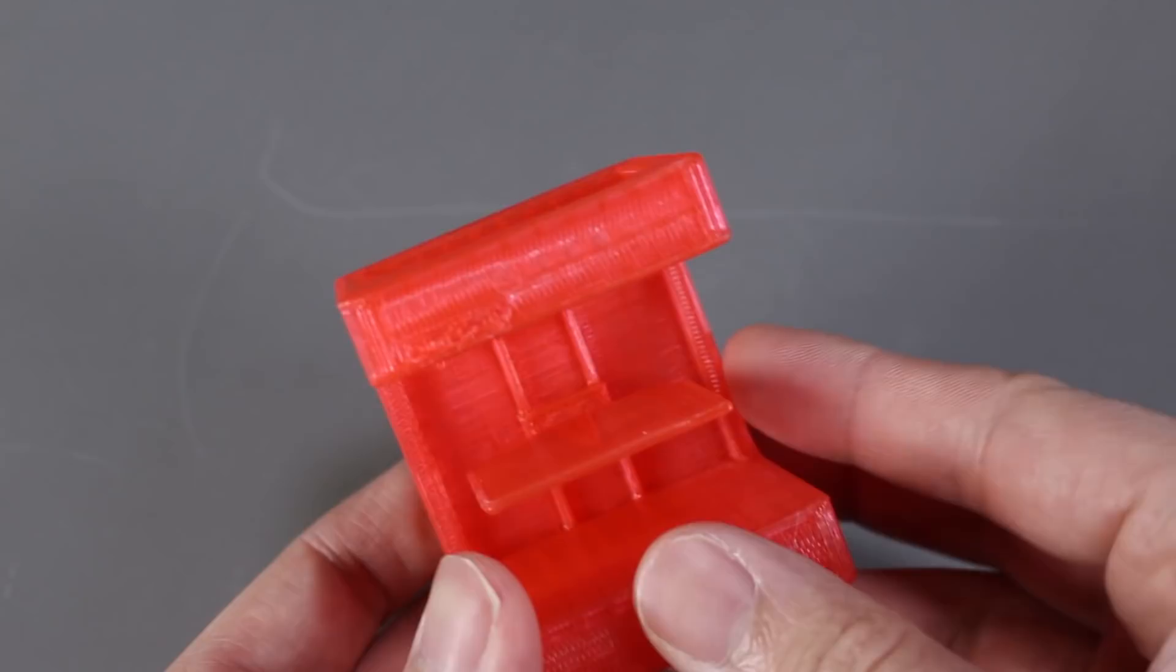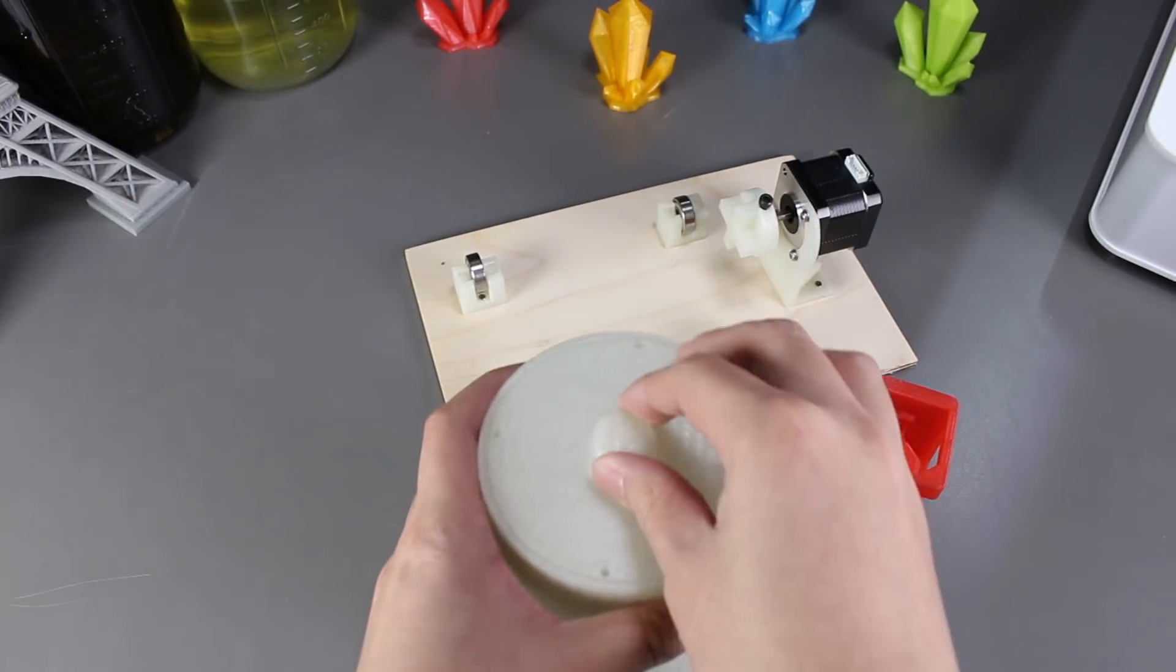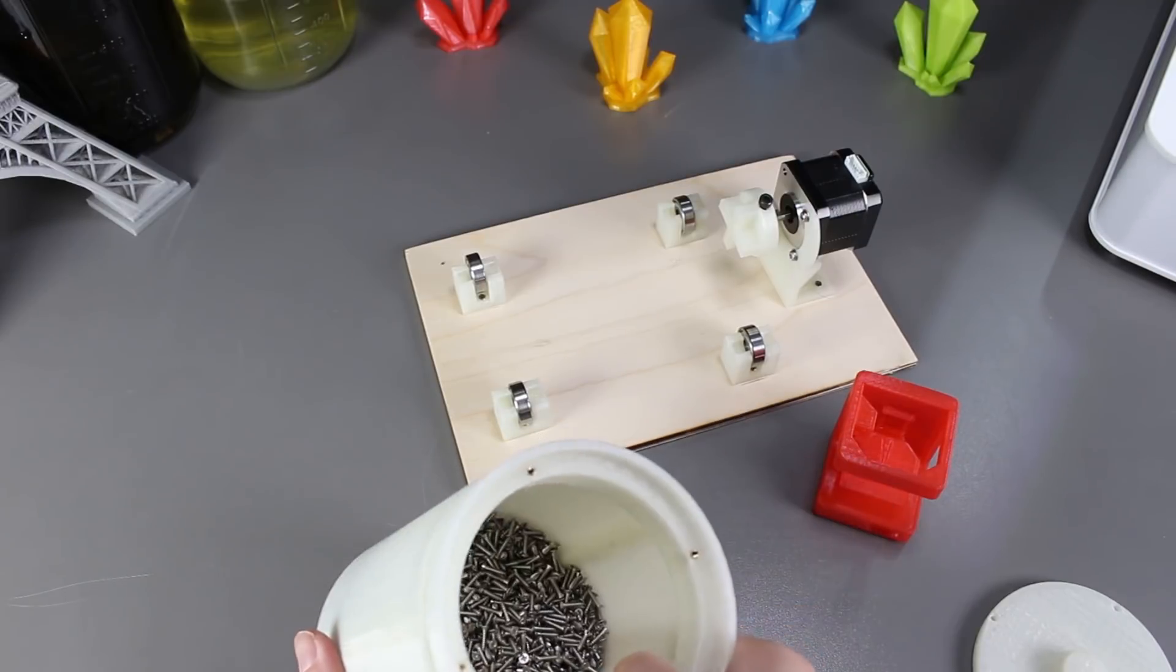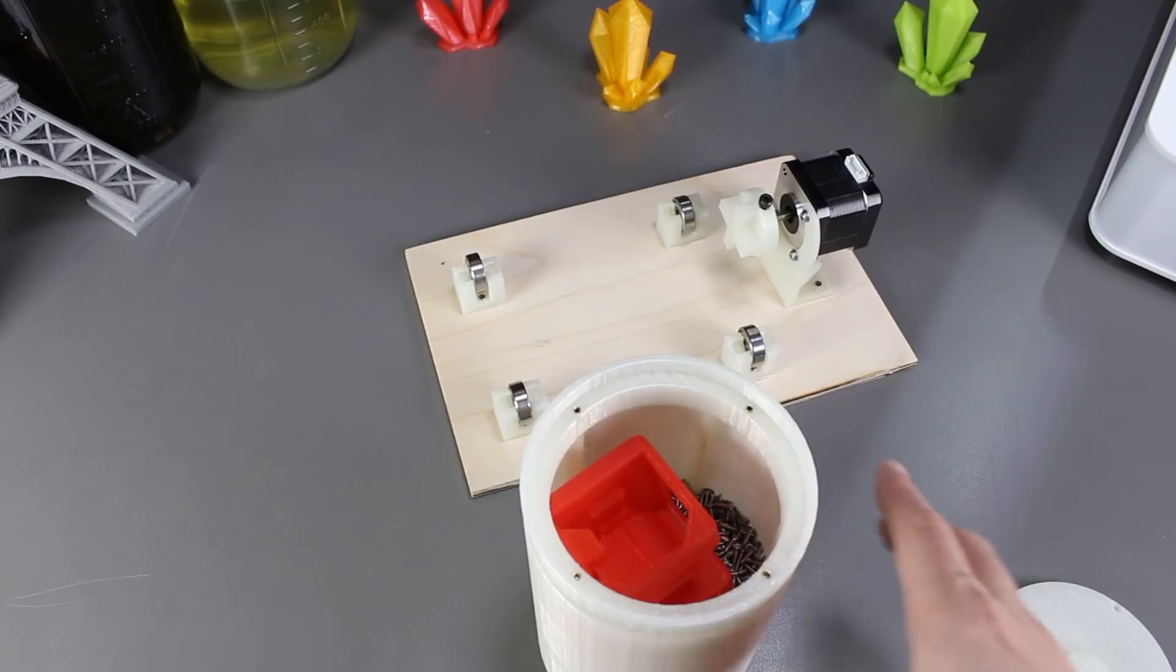So now let's move on to placing it into the tumbler. For our experiment, we already filled our tumbler with screws as the abrasive. We'll put the print in and then we'll close the lid.